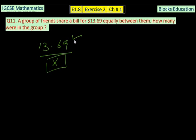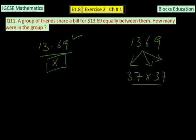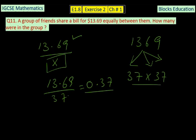So it means that this is a decimal number, and it means we are looking for 1369, and the factors of 1369, and it happens to be 37 into 37. It means that 13.69 divided by 37 makes 0.37, and that's what we're looking for. It means 37 has divided fully 13.69.